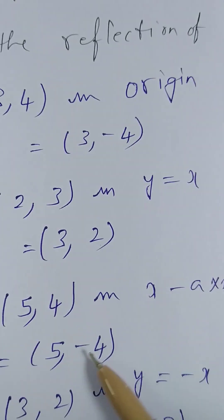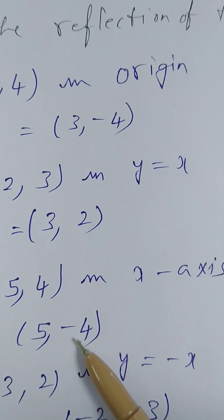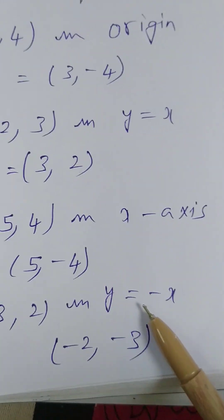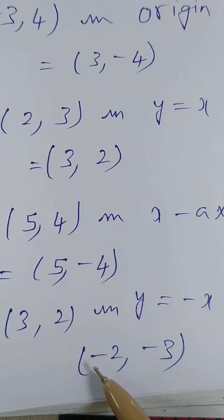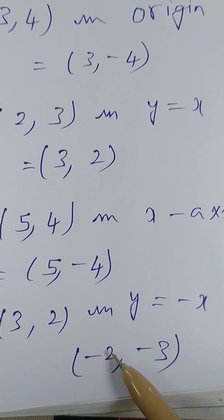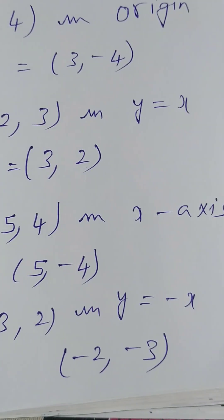(5, 4) in x-axis. X-axis means (5, 4) will become (5, -4). Then (3, 2) in y equals minus x means it will be changing the signs and changing the places. Thank you.